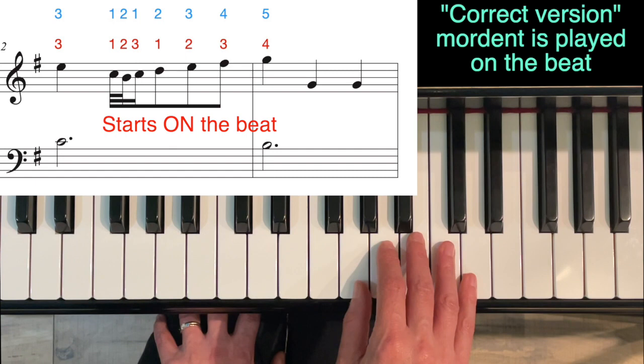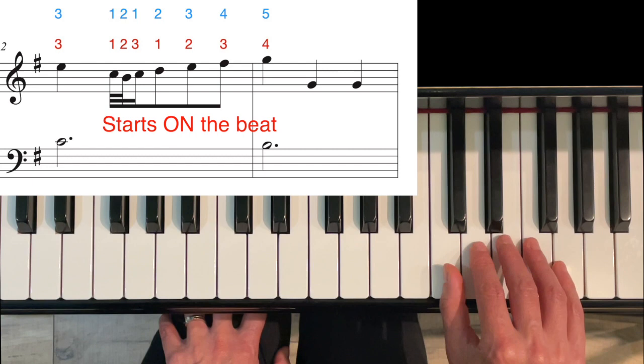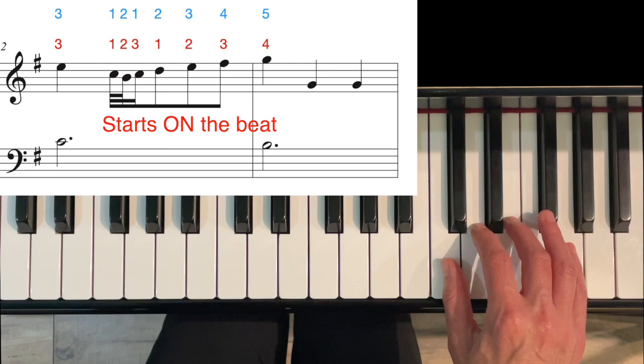If you look above, I've written out how you're supposed to play it in the Baroque era, which is starting on the beat. I'd like to offer you two fingerings for how to play this, and then I want to show you one other thing before moving on. Either way, we're going to start on finger three for the E. You can either cross over with 1-2-1 for the mordent, or you can do 1-2-3.